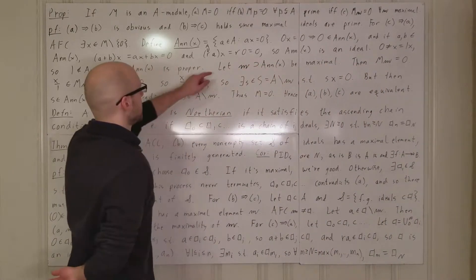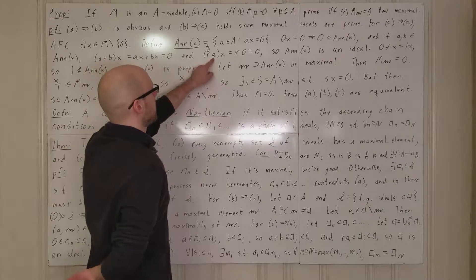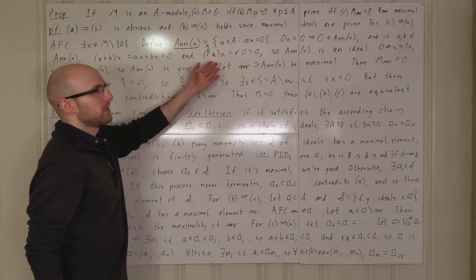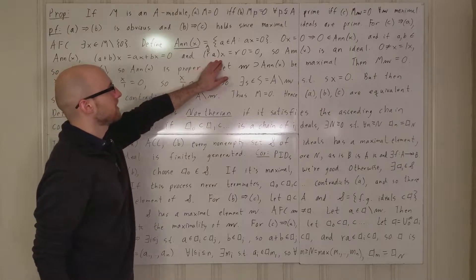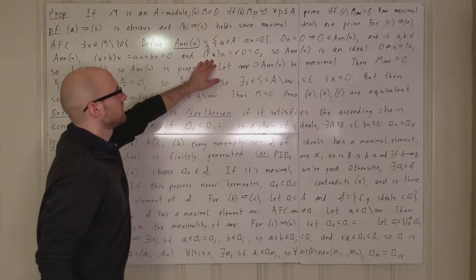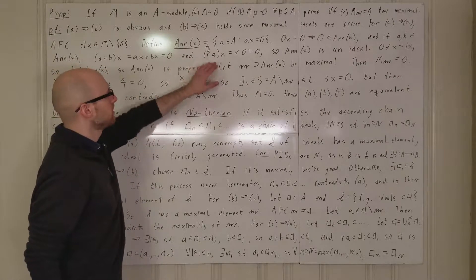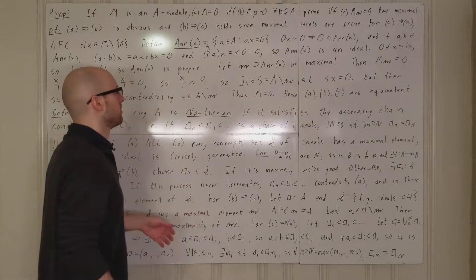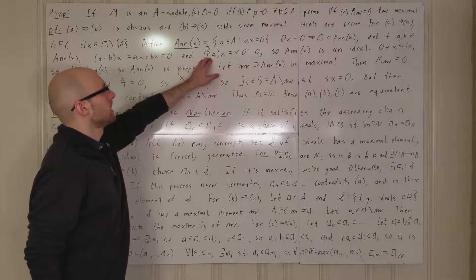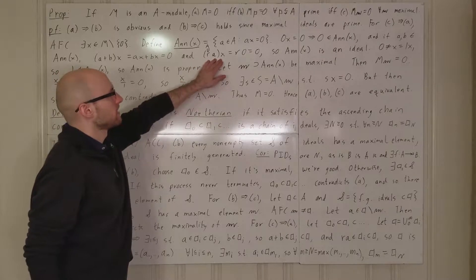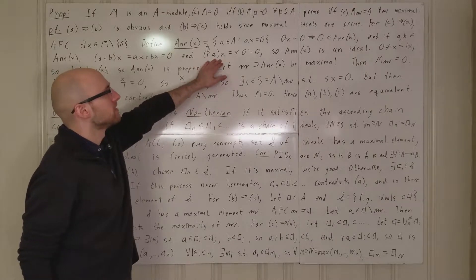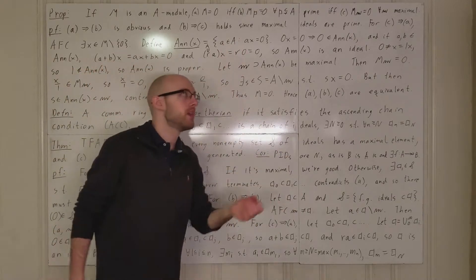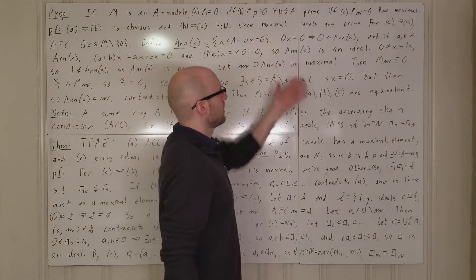To show closure under multiplication by the ring: take r in A and a in the annihilator. Then r times a applied to x, by associativity of the module structure, equals r applied to (a times x), and a times x is zero since a is in the annihilator. So this is r times zero, which is zero. Therefore the annihilator is an ideal.